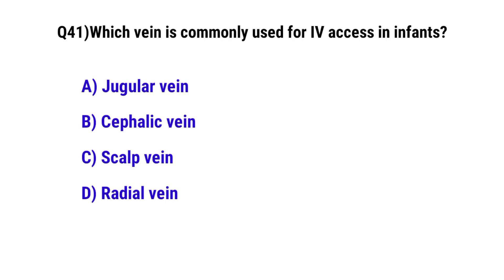Question number 41. Which vein is most commonly used for IV access in infants? The correct option is C: Scalp vein.